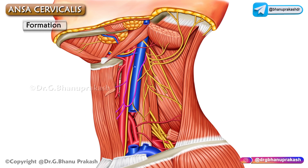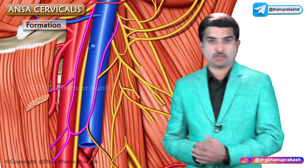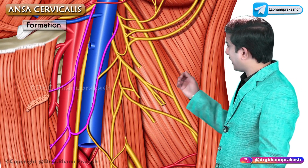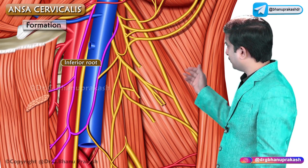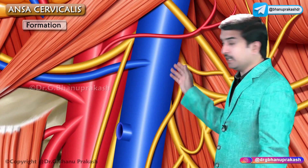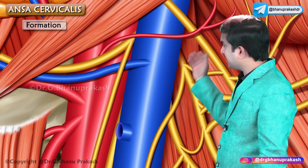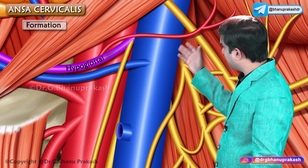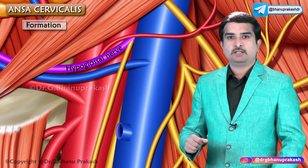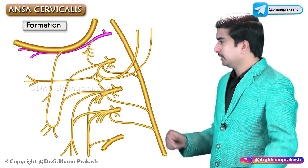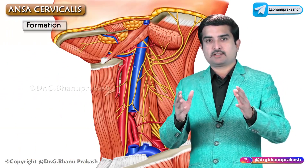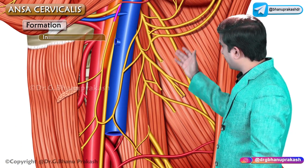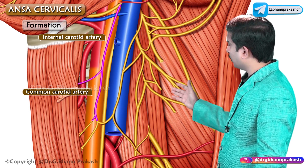Here let us discuss about the formation as well as the branches of the ansa cervicalis. As you can see in this picture, the ansa cervicalis is formed by the superior root as well as the inferior root. The superior root is a continuation of the descending branch of the hypoglossal nerve, and its fibers are derived from the first cervical nerve. This root descends over the internal carotid artery as well as on the common carotid artery.